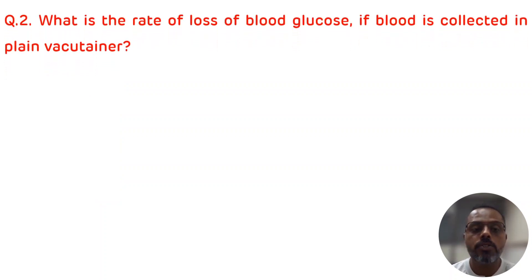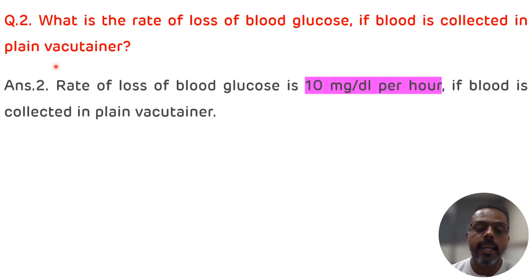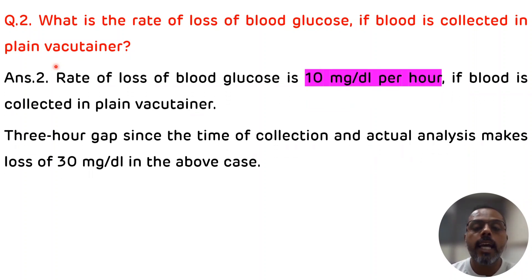Second question is: what is the rate of loss of blood glucose if blood is collected in plain vacutainer? The rate of loss of blood glucose if blood is collected in plain vacutainer is 10 milligram per deciliter per hour. In this case, 3 hour gap is there since the time of collection and actual analysis, so it will result in a loss of 30 milligram per deciliter.